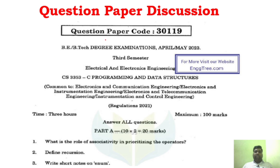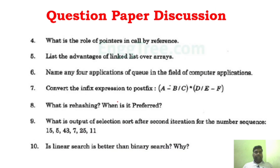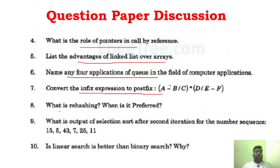Now for the question paper discussion, we will see the April/May 2023 question paper. Looking at the direct questions: what is the role of associativity and precedence using operators? Define recursion. Write short notes on enum. What is the role of pointers? Advantages of linked list over arrays. Any four applications of the queue. Convert an infix expression to postfix. What is rehashing? What is the output of selection sort? Is linear search better than binary search? Why? All those are direct questions.